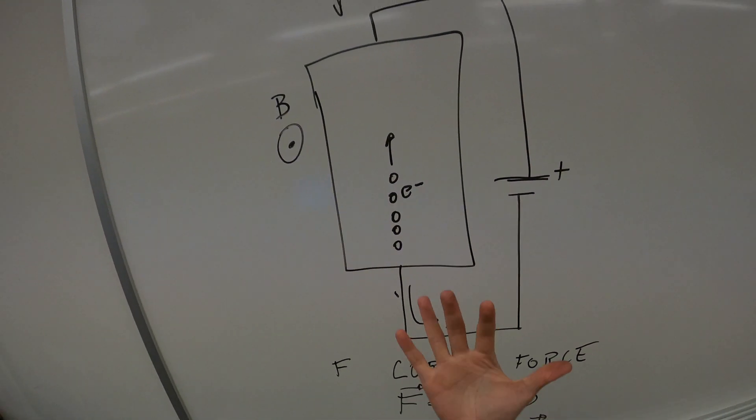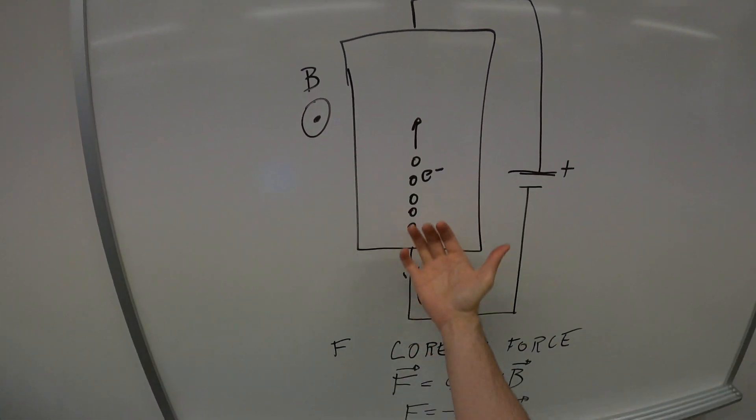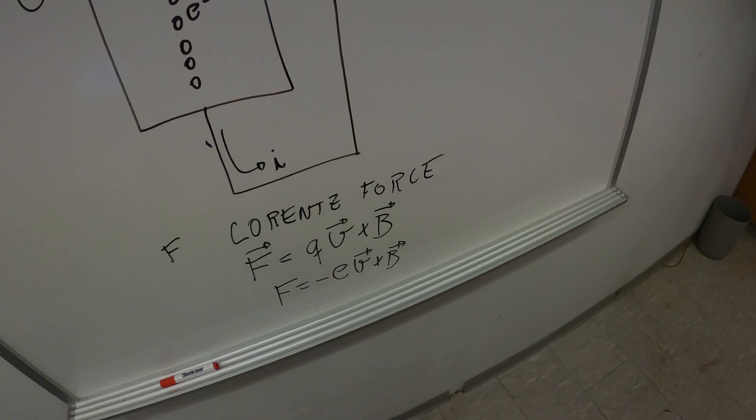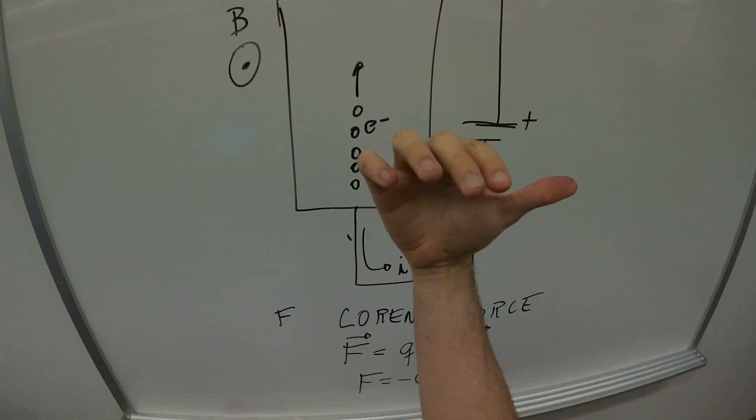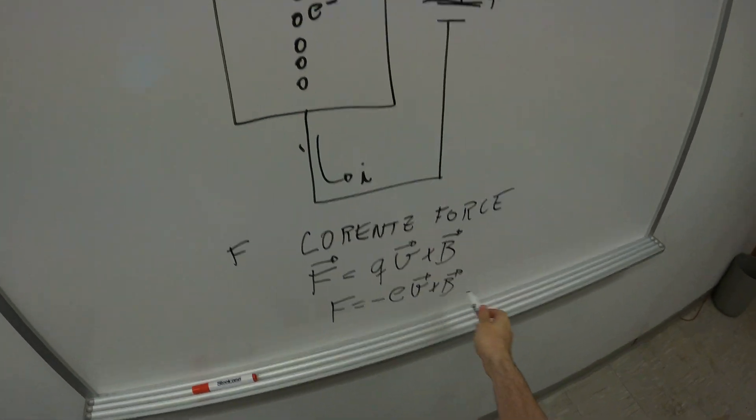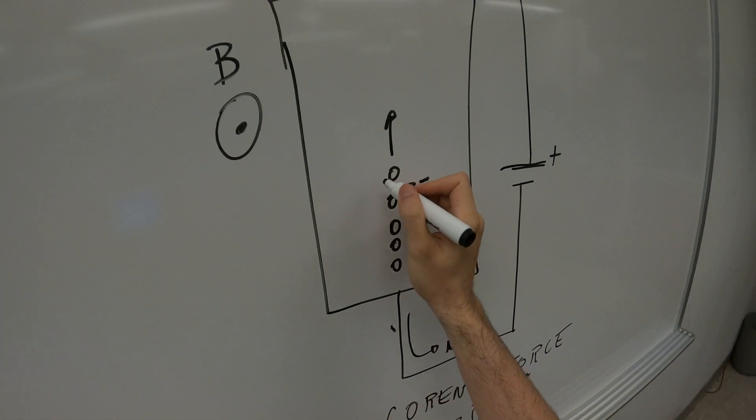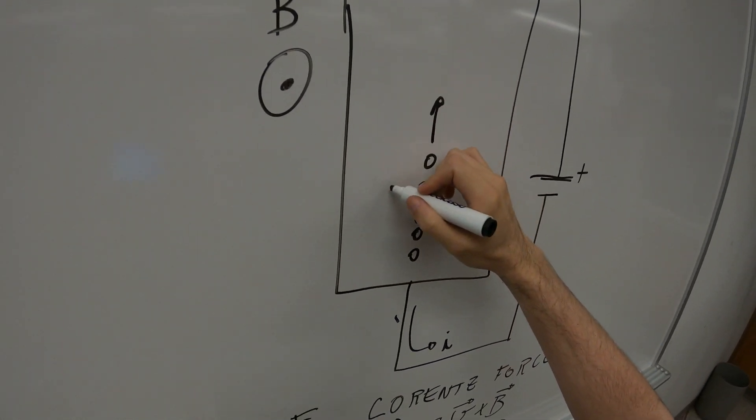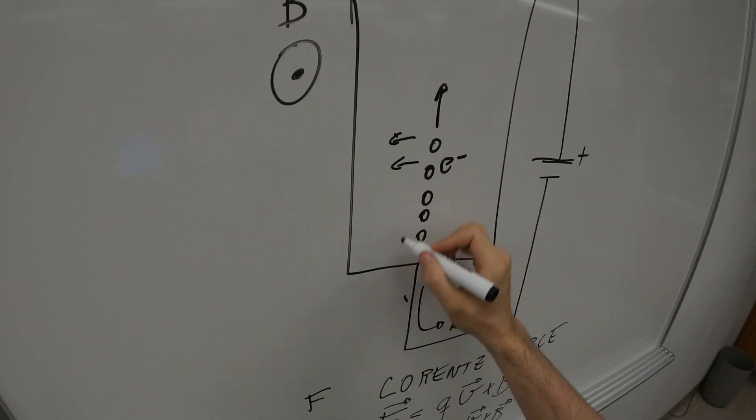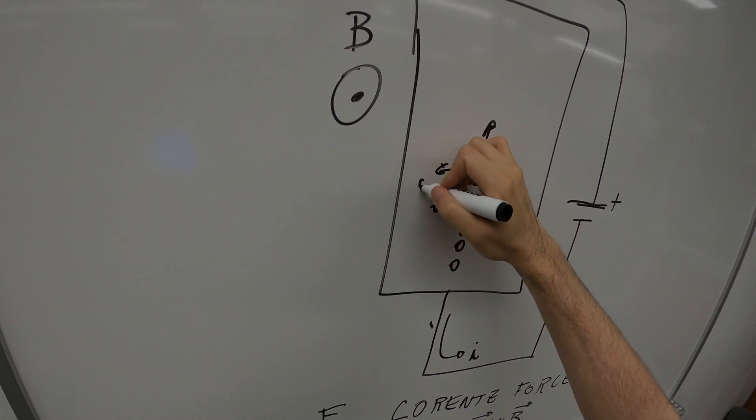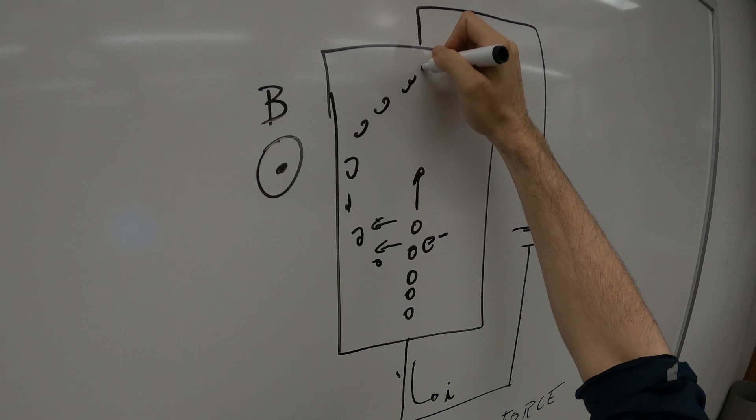So if the magnetic field is pointing in this direction, by the right hand rule, the force will be pointing in the opposite direction. So the electrons will experience a force in this direction and that will cause the electrons to deflect to this side.